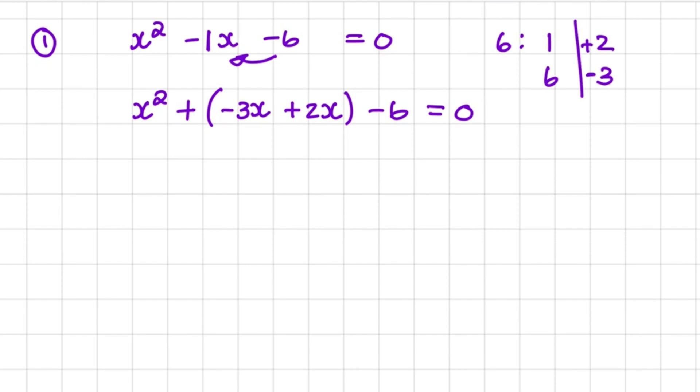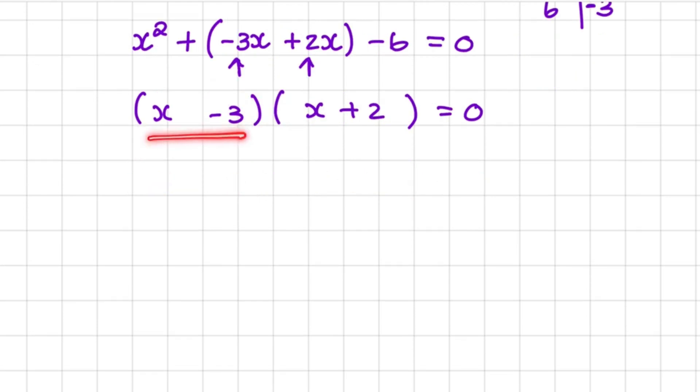This allows me to see the two values of x that I need for my brackets. So I'll have (x - 3)(x + 2) = 0.